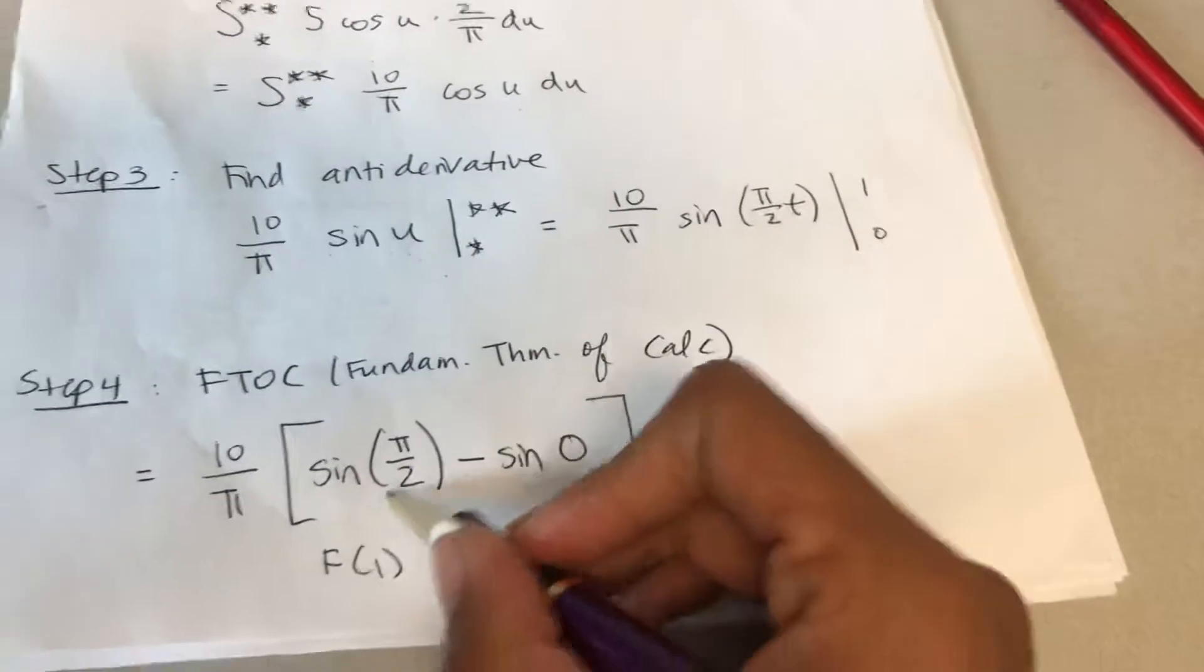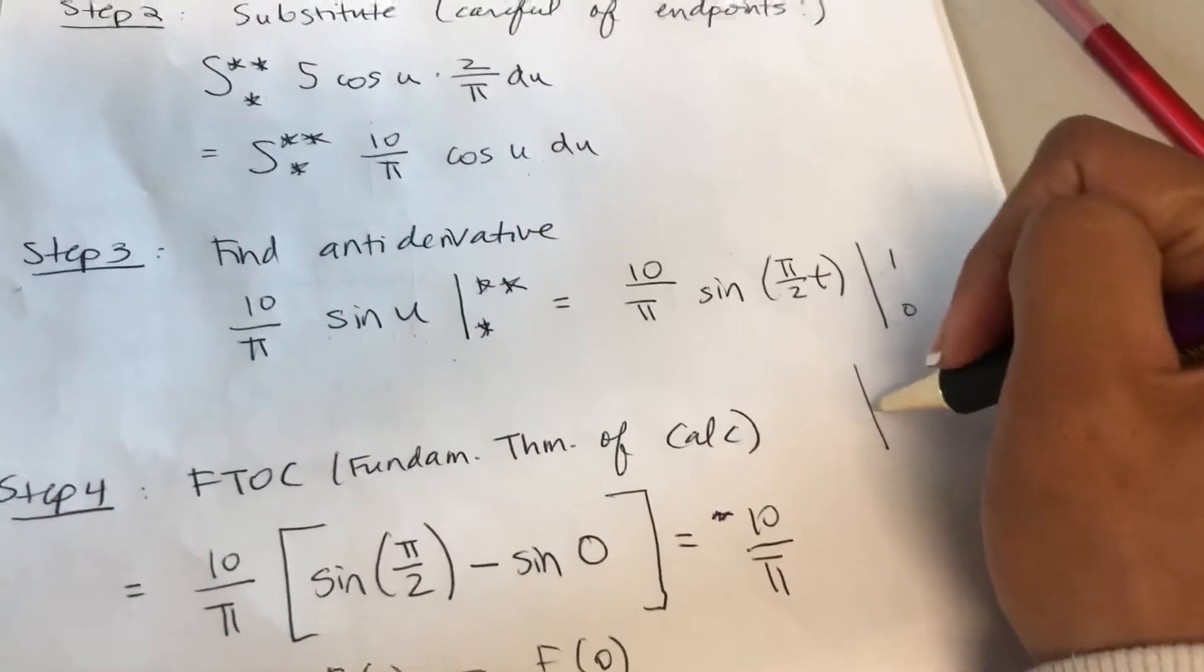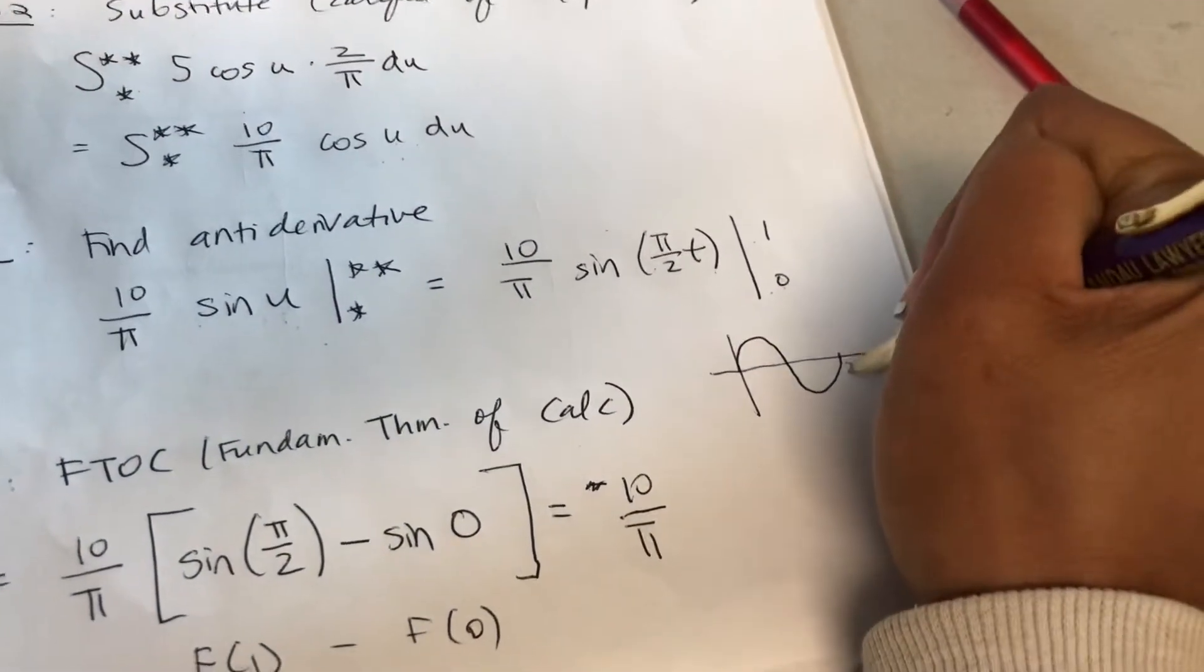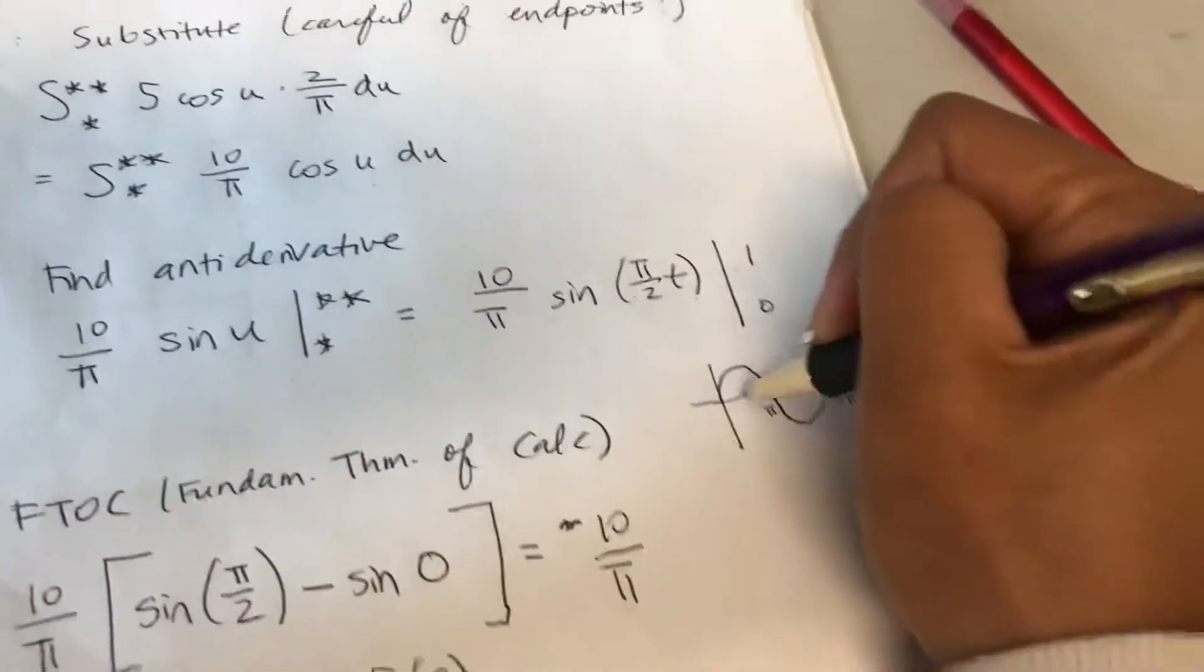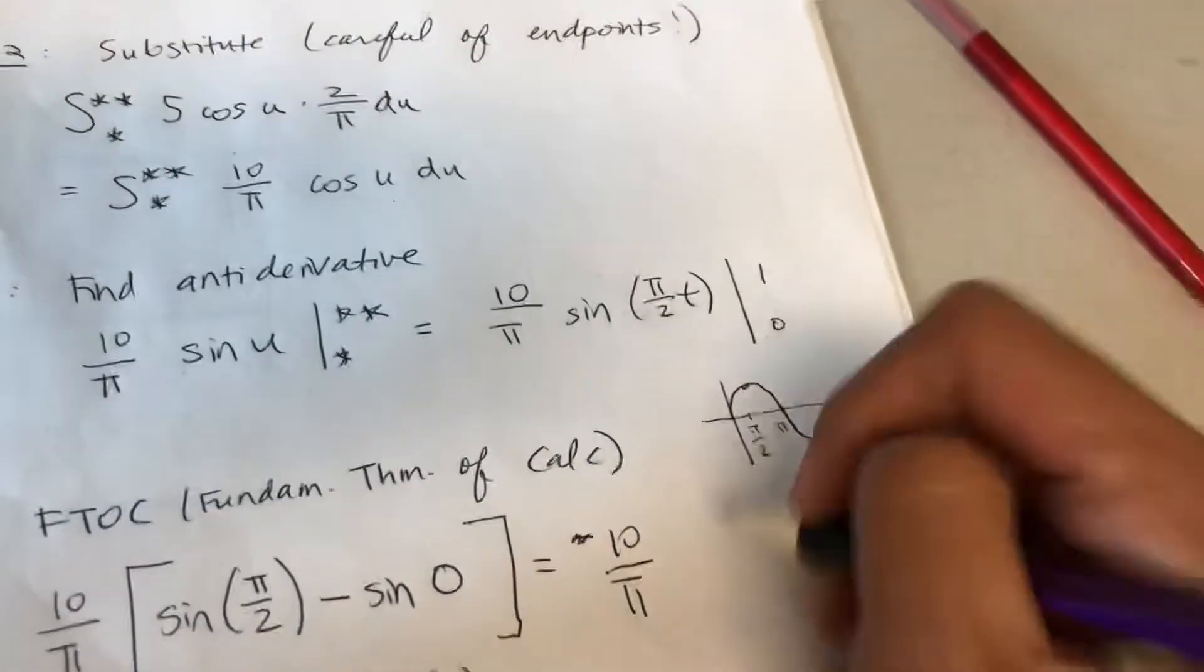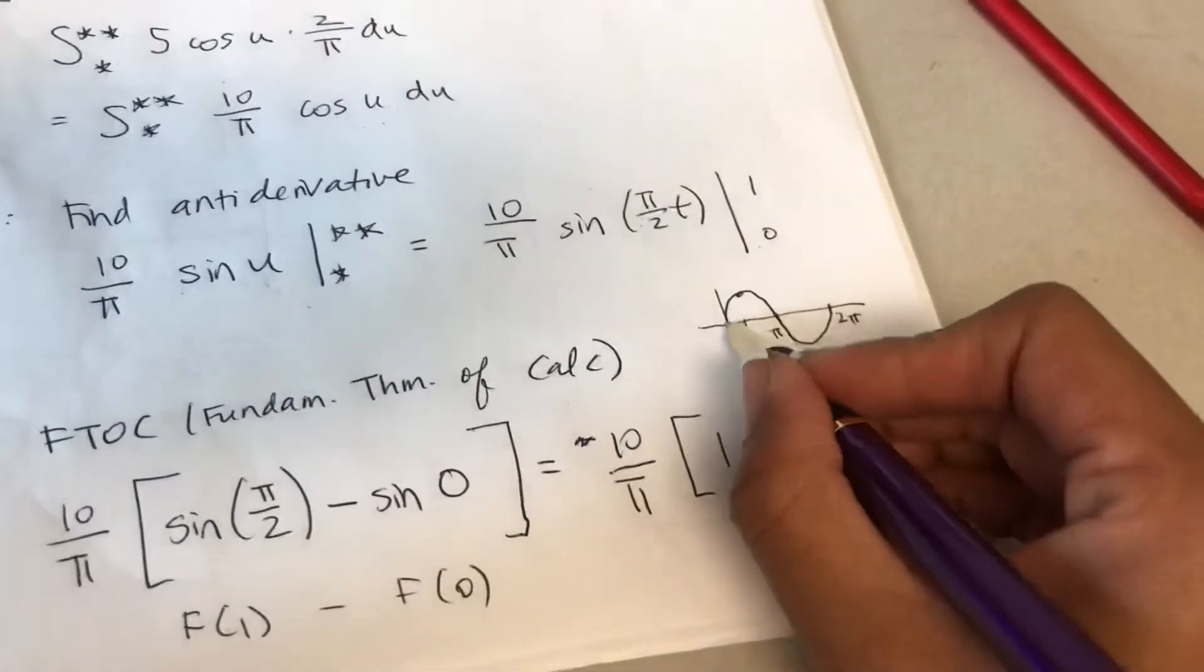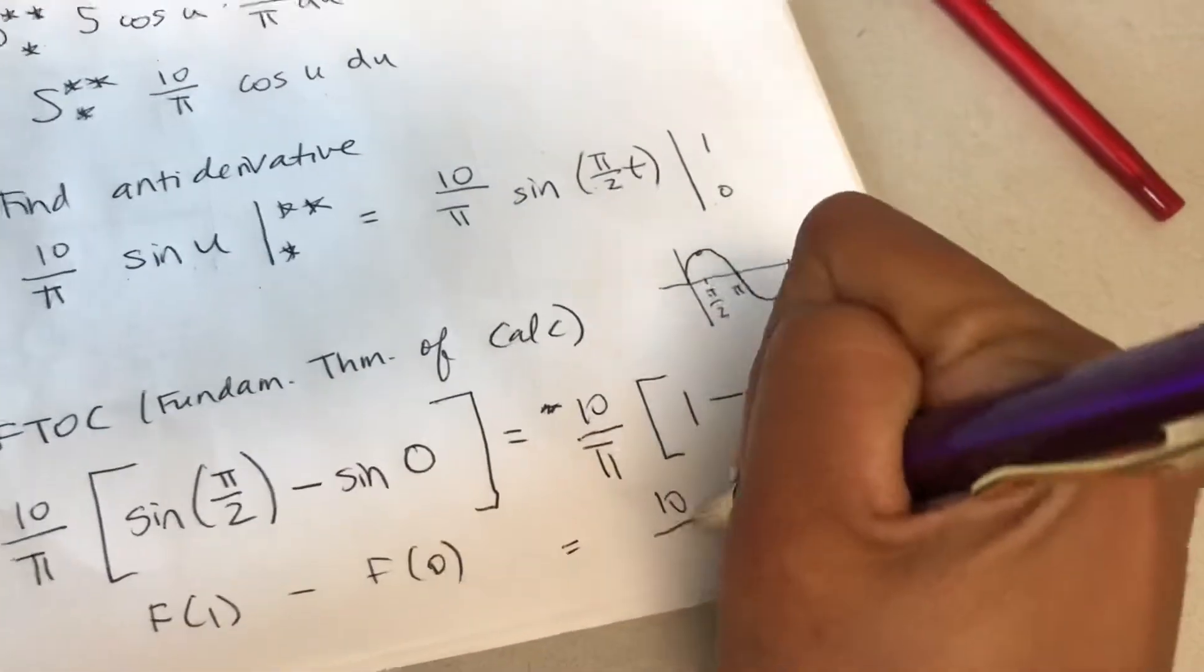Sine pi over 2. If you forget, you can always put that in your calculator. Make sure it's in radians, or if you memorize it, use that. For me, since I don't memorize it, I draw the sine curve. This is 2 pi, this is pi, pi over 2 is right here. So I know that sine pi over 2 is actually equal to 1. So 1 minus sine 0 is just 0. My answer becomes 10 over pi.